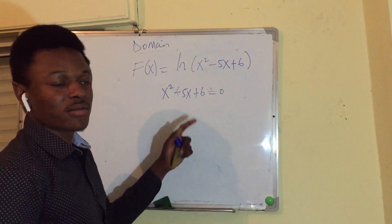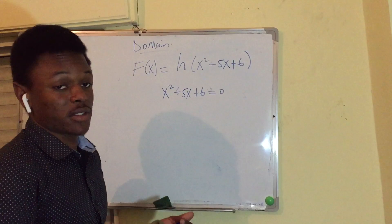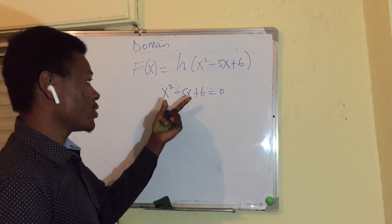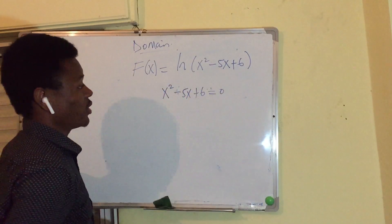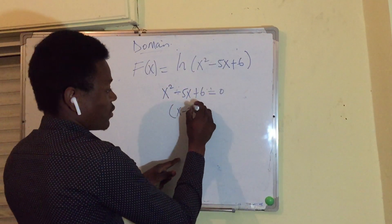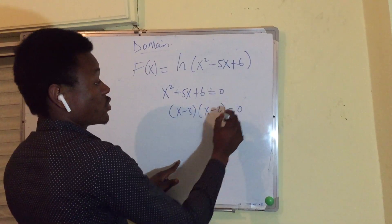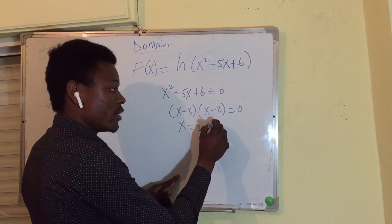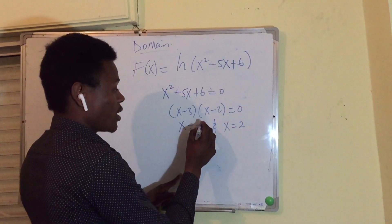I am solving this using one of several methods — the quadratic formula or factorization. Because this is a quadratic equation, using the factorization method gives us x = 3 and x = 2.